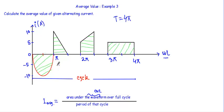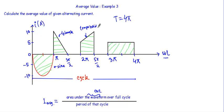From 0 to π I will see this sine wave; from π to 3π/2 I will see this triangle; from 2π to 5π/2 I will see this trapezoid; and from 3π to 4π I will see this rectangle. The area covered by the sine wave is A1, the area covered by the triangle is A2, the area covered by the trapezoid is A3, and the area covered by the rectangle is A4.